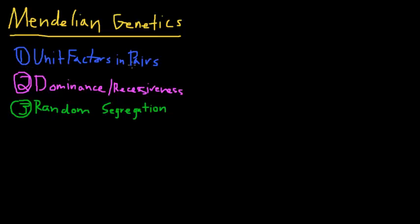Unit factors in pairs is basically saying that for any given specific feature, there are two alleles. That's just the basic—we see AA, or AA, whatever. We always see pairs.